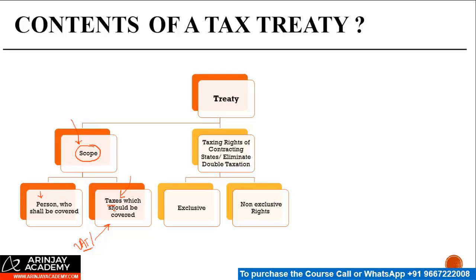The second part is: once you've decided which people are covered and what taxes are to be levied, what are the taxing rights of the contracting states? Does India have a right to tax a particular payment? If it has that right, how much tax is to be applied? Whether the right to tax is exclusive or non-exclusive — exclusive could be where India levies the full rate of tax on a particular income, while non-exclusive could be something like royalty and FTS where India levies a 10% withholding tax, and the balance is paid by the foreign company in the country of its residence.